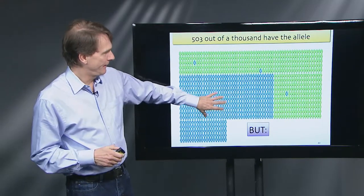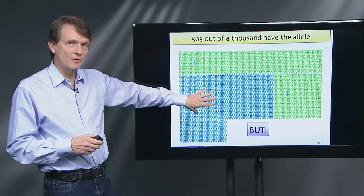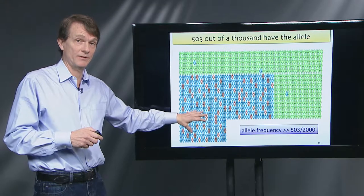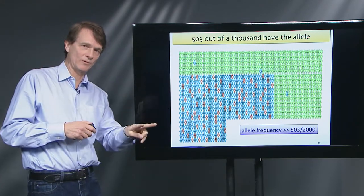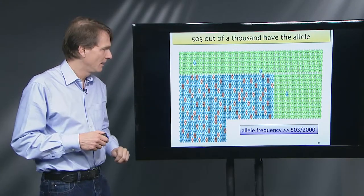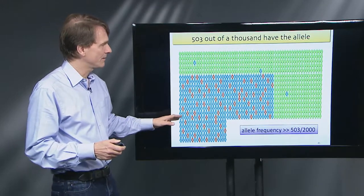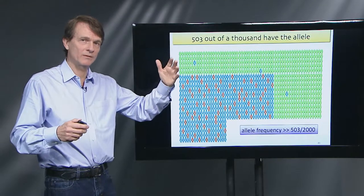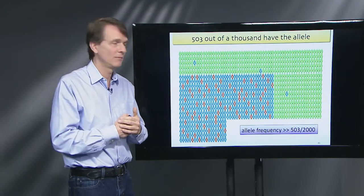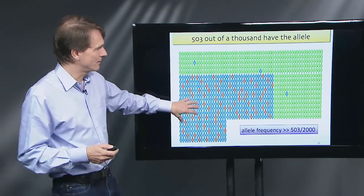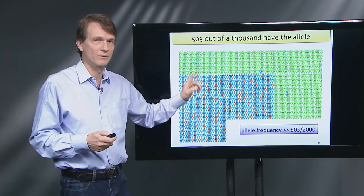If 503 out of 1,000 people have the allele, the frequency is so high that some individuals will be homozygotes — they received a copy of that allele from both mom and dad, so both the maternal and paternal chromosomes carry that allele. This is the subject of Hardy-Weinberg equilibrium. The key point is that once the frequency of an allele rises to a certain level, the chance that somebody is homozygous increases, and the actual allele count is higher than you might initially expect.